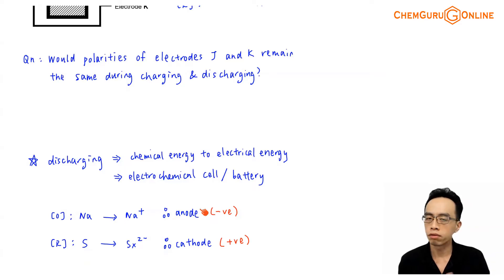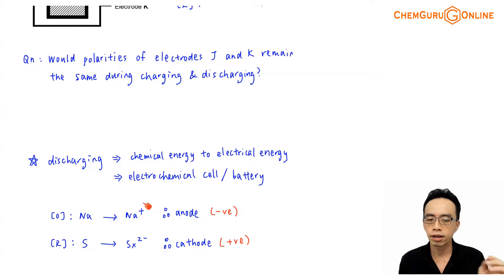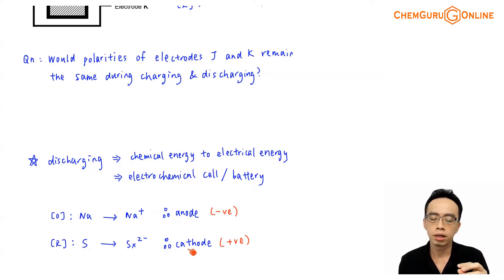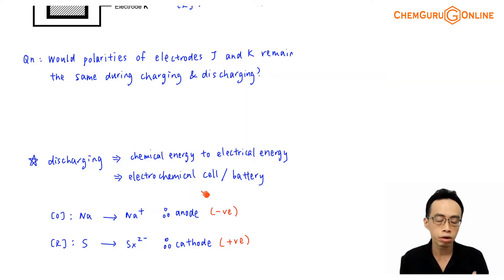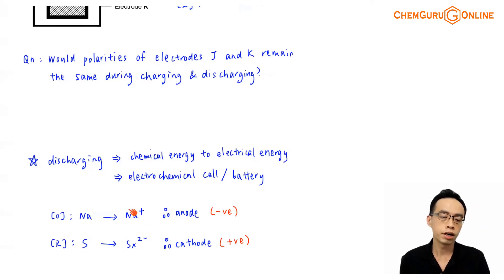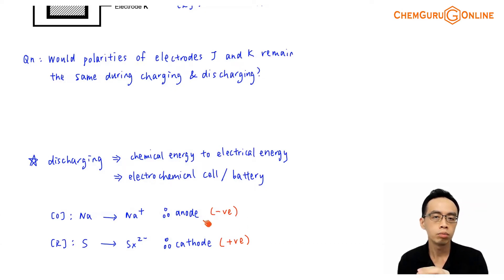The next thing we have to figure out is the charges. For an electrochemical cell, the anode is negatively charged and the cathode is positively charged. Why? During discharging, a redox reaction takes place, generating a flow of electrons. Sodium is oxidized first — oxidation is the loss of electrons — and all these excess electrons are deposited at the anode. This is the reason why the anode is negatively charged.